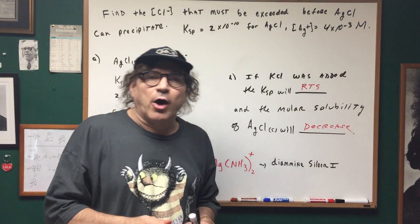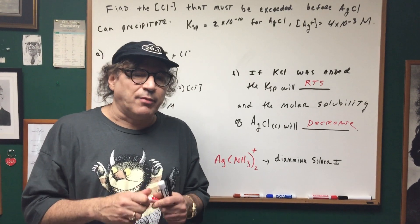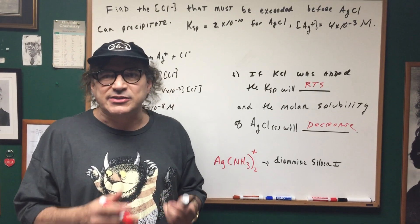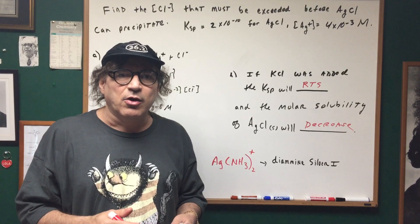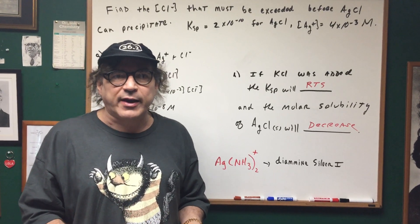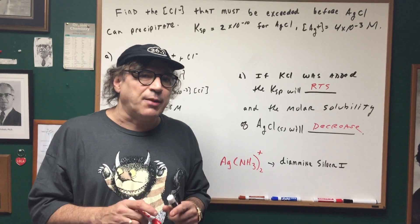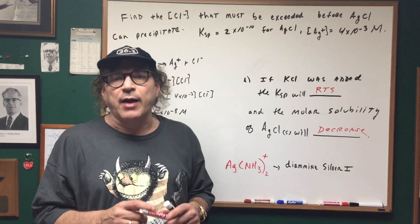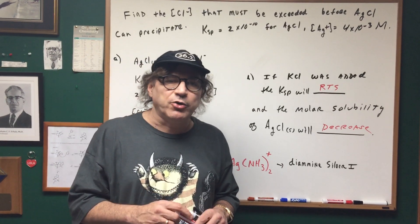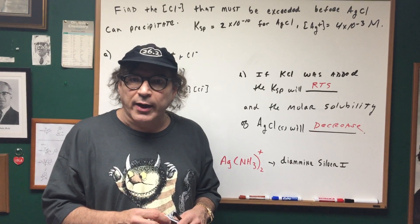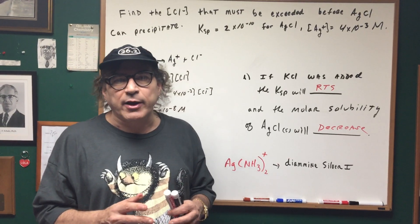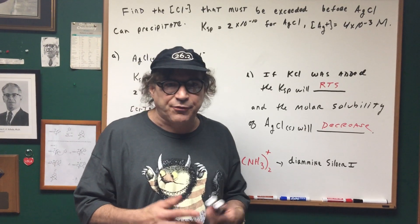One final note, whenever you see a transition element, for instance like silver or you have zinc or you have cobalt or nickel, always remember it's going to be more soluble in ammonia because ammonia will form a complex ion and complex ion is very favorable as far as forming.